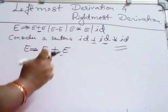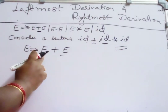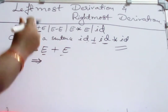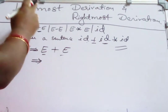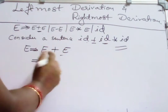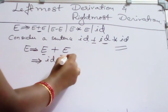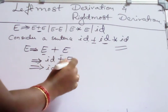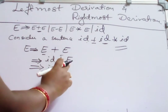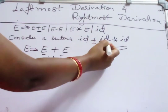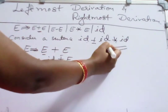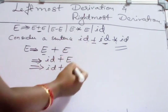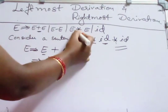This is my leftmost variable, so I should substitute E with ID. Always the substitution is from the leftmost variable in leftmost derivation — the leftmost variable is replaced at every step. So I am replacing this E with ID, giving ID plus E. Now I want ID plus ID star ID, so I need to expand this next E.